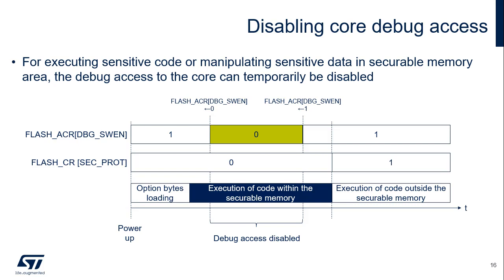Taking control of the Cortex-M0+ by using invasive debug can be temporarily disabled through the DBG_SWEN control bit. For instance, the secure boot can decide to clear this bit before performing authentication and decryption, and then set this bit to 1 to re-enable invasive debug once the authentication is successful.